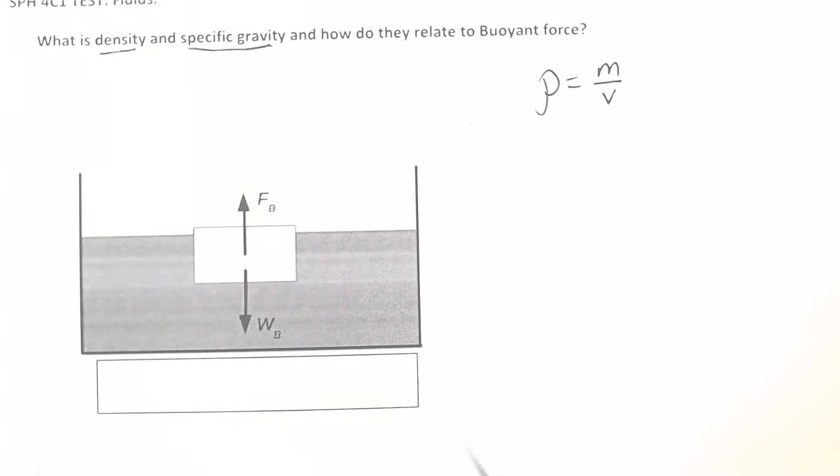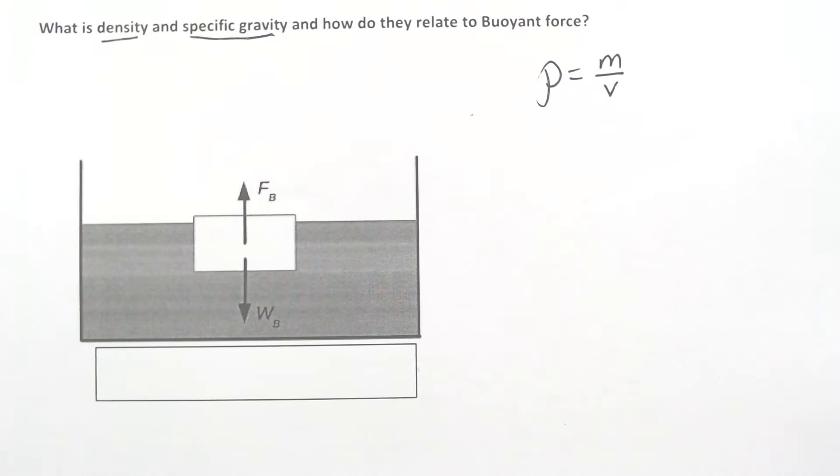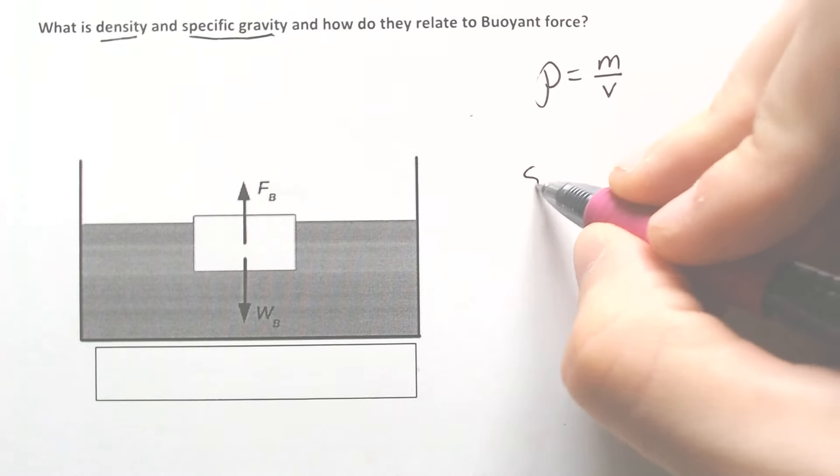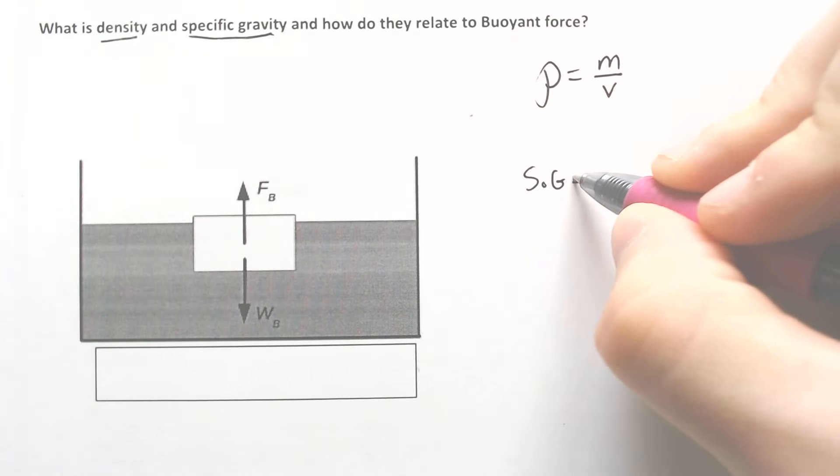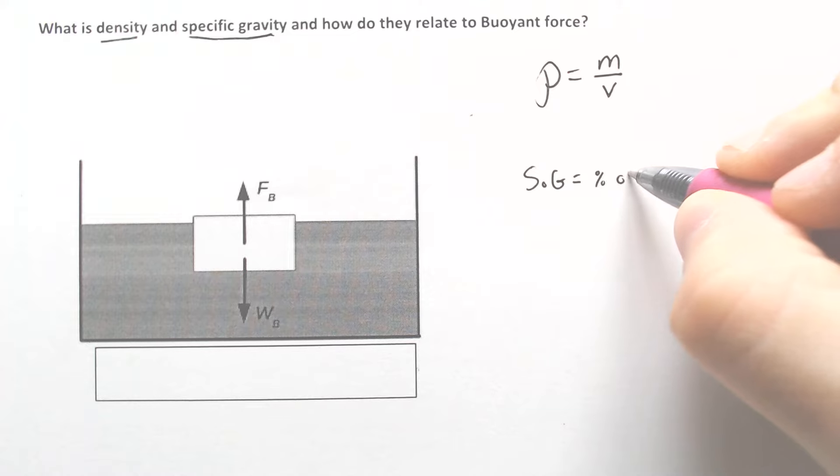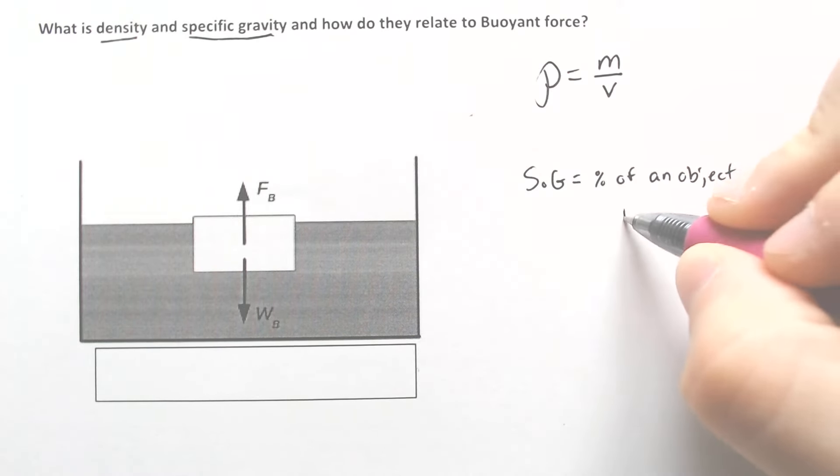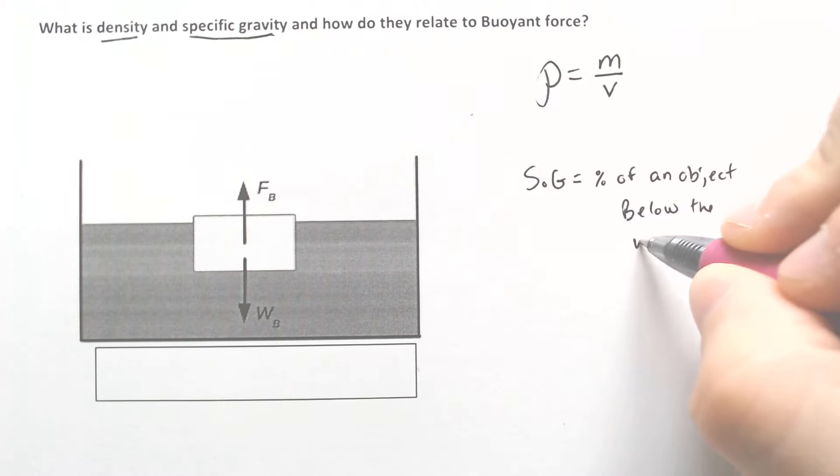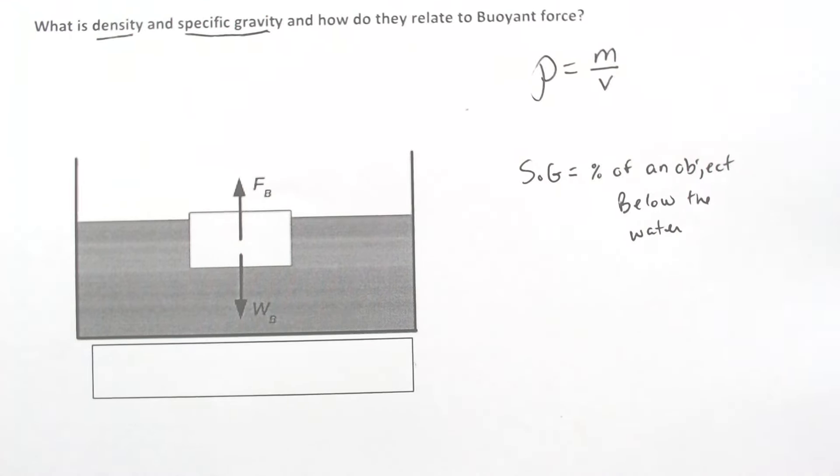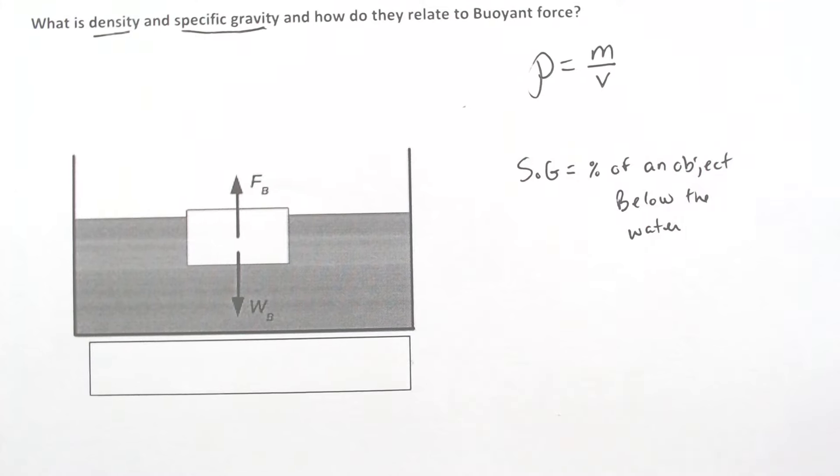And with specific gravity, specific gravity is going to be representing, they call it SG, it will tell you the percent of an object below the water or below the fluid that it is in, which is kind of neat.